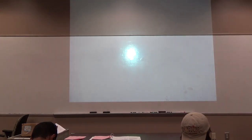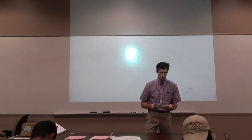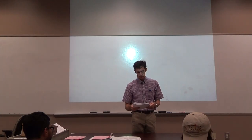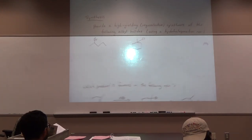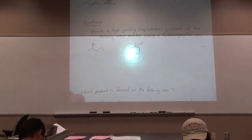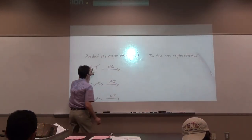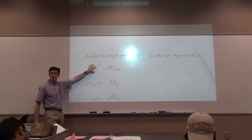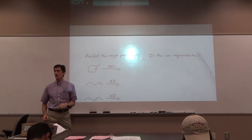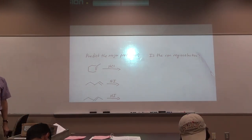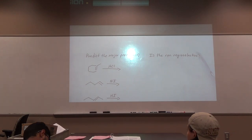Any questions on that first page? If there's no questions, let's look at the second page. Predicting products — we have an alkene with the double bond as part of the ring. Here's your alkene reacting with HCl. Alkenes react with HX to give what type of product? An alkyl halide. So that's the first step.